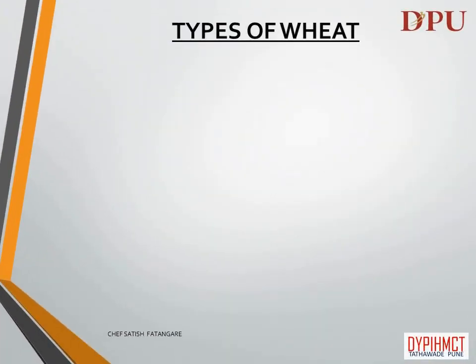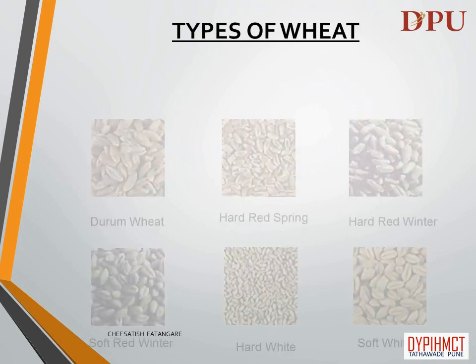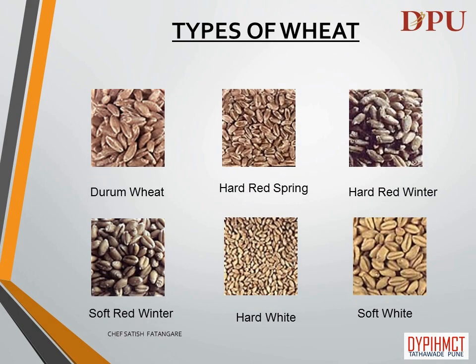In this slide we will discuss about the types of wheat grain. The types of wheat are: Durham wheat, hard red spring, hard red winter, soft red winter, hard white, and soft white.